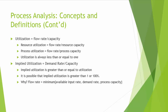Once we have defined flow rate and capacity, we can define utilization. Utilization is the ratio between flow rate and capacity, and this concept can be applied to both resources and the process. Resource utilization is flow rate divided by resource capacity, and similarly, process utilization is flow rate divided by process capacity. Utilization is always less than or equal to 1, because flow rate is always less than or equal to capacity.